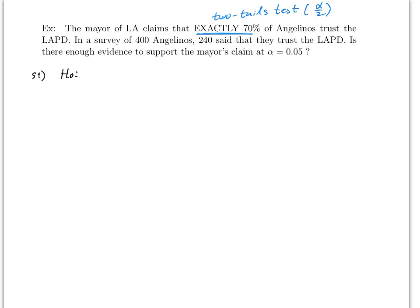It's going to be this: the mayor is claiming 70% of Angelinos like the LAPD, so that's what .70 means. And the alternative, since this is two tails, it's going to be not equal. So this is what two tails looks like. Now if the problem didn't say exactly or in parentheses tells you two tails, then it's pretty likely there is one tail like all the previous examples that we did.